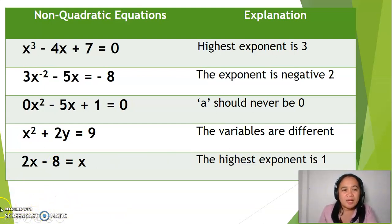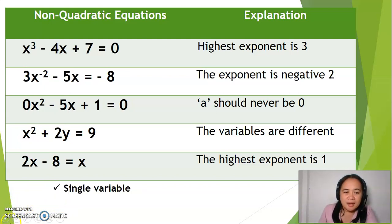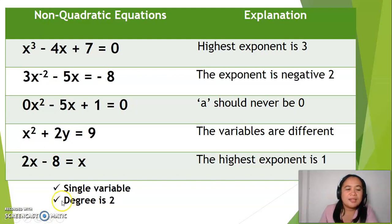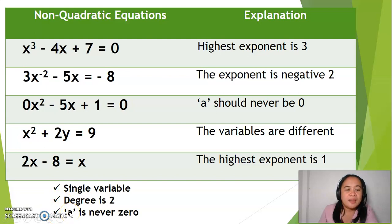Going back, a quadratic equation should have a single variable. Number 2, the degree is 2. And number 3, a should never be 0.